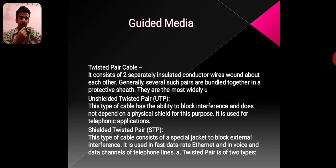STP – Shielded Twisted Pair. This type of cable consists of a special jacket to block external interference. It is used in fast data rate Ethernet and in voice and data channels of telephone lines. Twisted pair cable is of two types: UTP and STP.